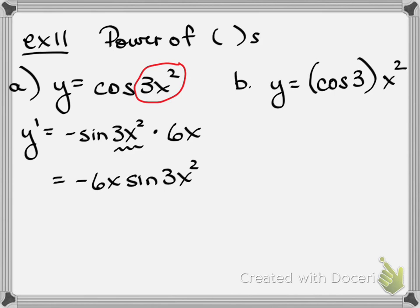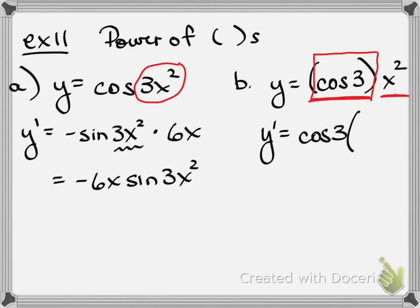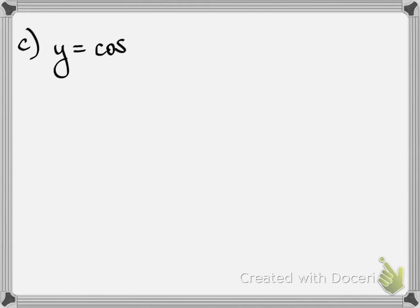Part b is really similar but it's the cosine of 3, times x squared — all they did was add a set of parentheses but it completely changed the problem. You might think that's a product of two different functions, but there's no variable in that first part — cosine of 3 is a constant you can evaluate on a calculator in radian mode. So whenever we have a constant and take a derivative, we just rewrite the constant and multiply by the derivative of the variable term. This answer would be 2x times the cosine of 3.